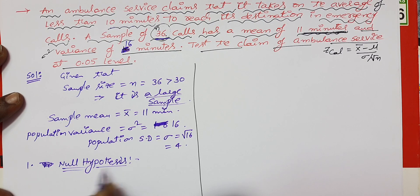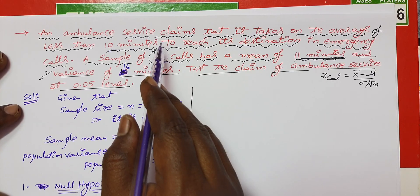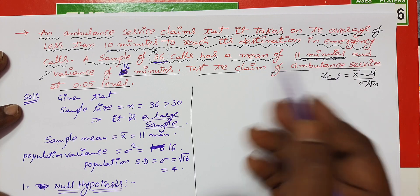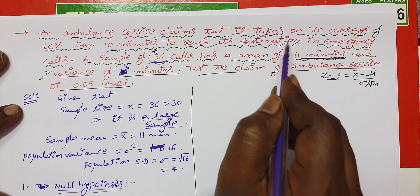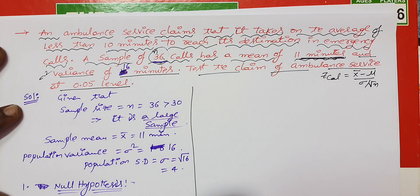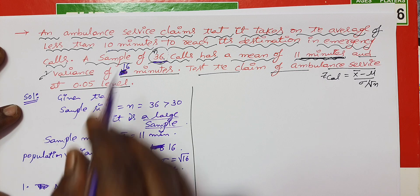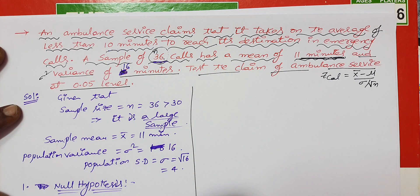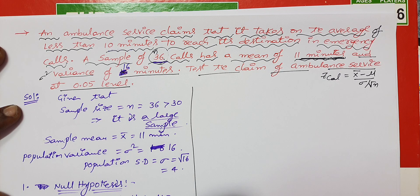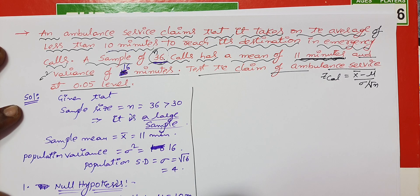So, what is the ambulance service's claim? The average time to reach the destination in emergency calls is less than 10 minutes. The average time to reach the destination place is 10 minutes — assume that as the null hypothesis H0: μ = 10.